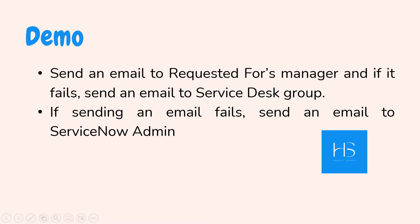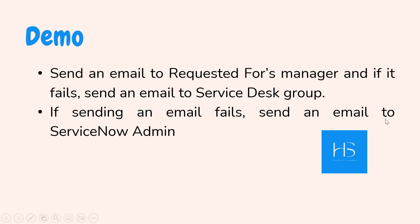In the demo, we will be sending an email to the requested-for's manager. We will create a catalog item for iPhone 13 where we send an email to the manager of whoever requested it. If it fails — for example if the user doesn't have a valid manager — we will send an email to the service desk group. In the next part, I will show nested try: if the service desk group doesn't have a valid email ID, we will send an email to the ServiceNow admin directly.